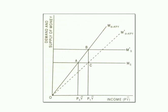In the figure, M'S and MS are money supply. Md = KPY, M'D = KPY are the demand for money. A is the initial equilibrium point.